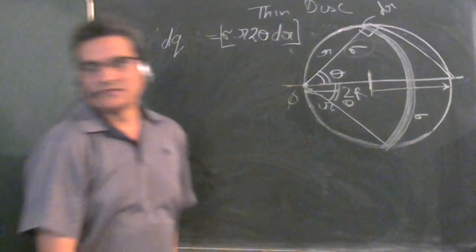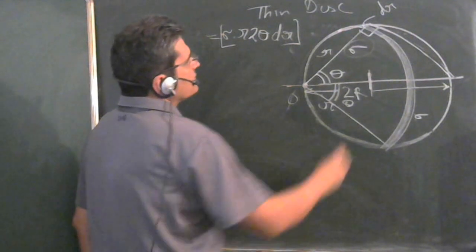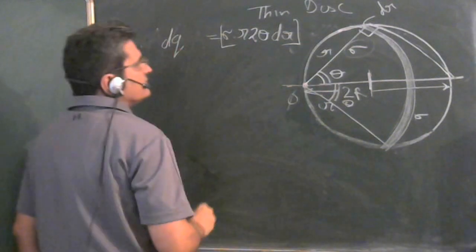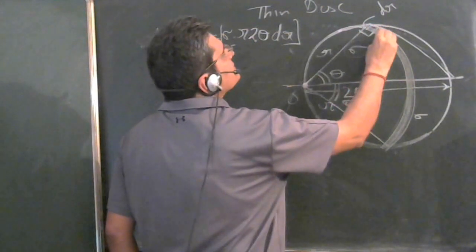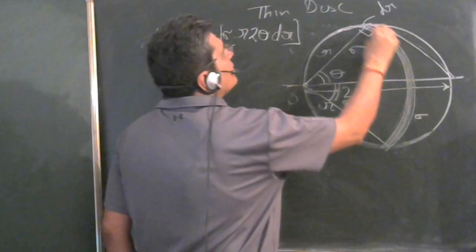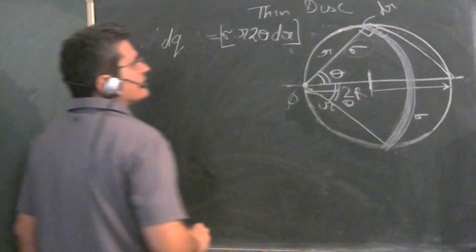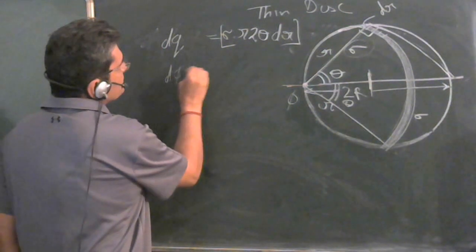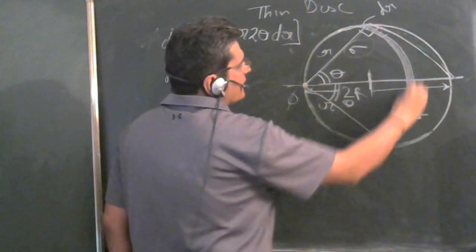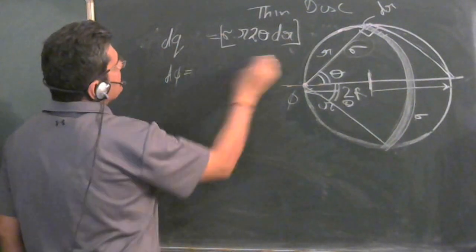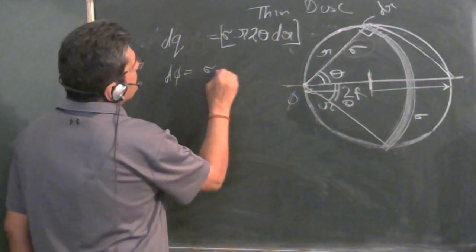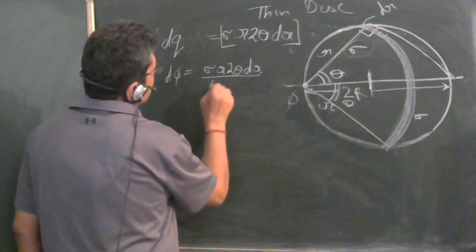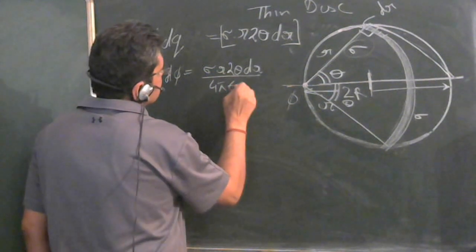Where sigma is the charge density we know. Now because of this charge, there will be a potential on this point. Even if we divide further into sub segments, all the segments are at the same distance R. So the potential d phi due to this arc would be equal to the charge here, sigma r times 2 theta dr upon 4 pi epsilon_0 r.